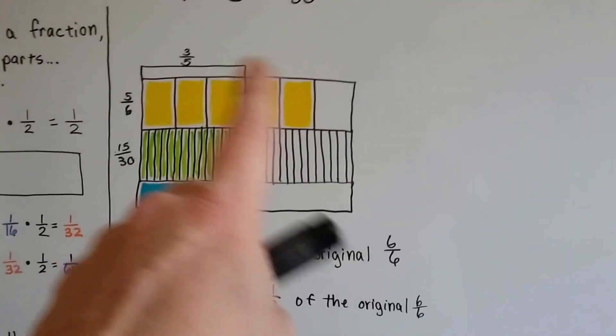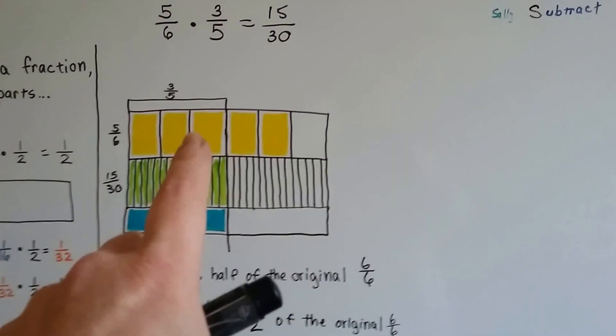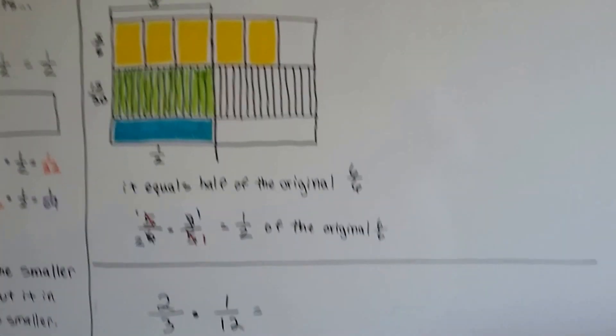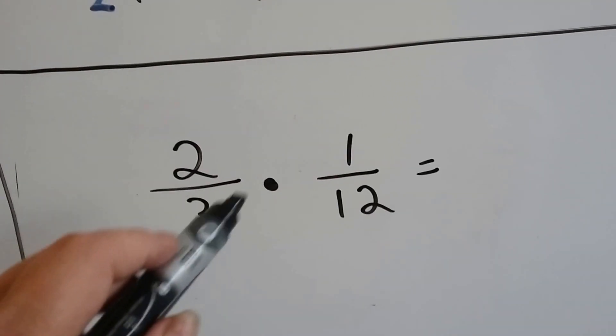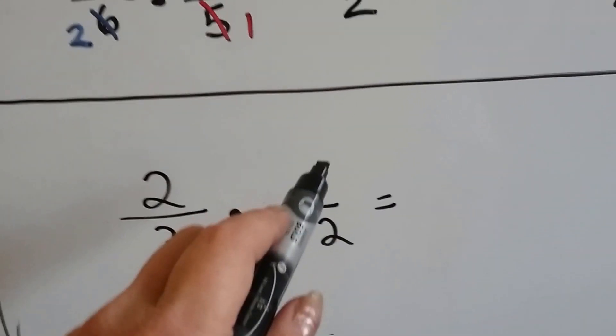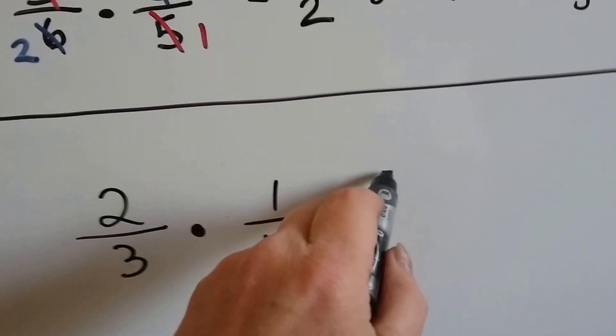Isn't that something how that happened? That's 3/5 of 5/6. I wanted to do this one in front of you and show you. If we have 2/3 times 1/12, we can do it the old way and do 2 times 1 is 2 over 36.